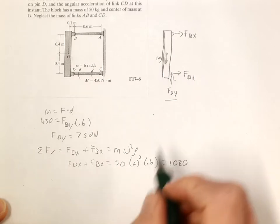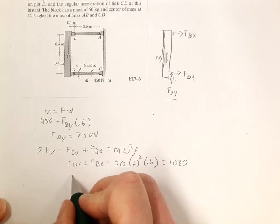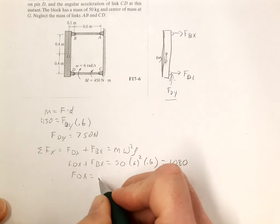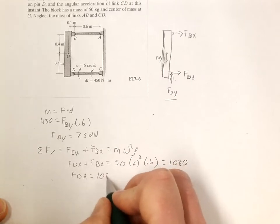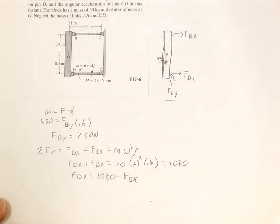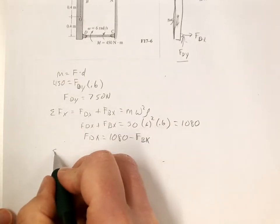Let's rearrange this since we're going to end up with three equations, three unknowns. We'll write FDX is equal to 1080 minus FBX. So eventually we'll substitute that into something else. So let's sum the forces in the Y.